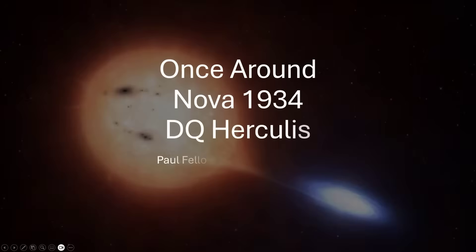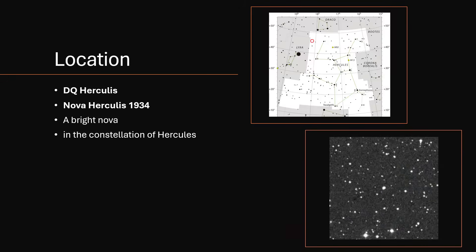Once around, Nova 1934, D.Q. Hercules. So D.Q. Hercules, or Nova Herculis 1934, was a bright nova, a new star, in the constellation of Hercules.